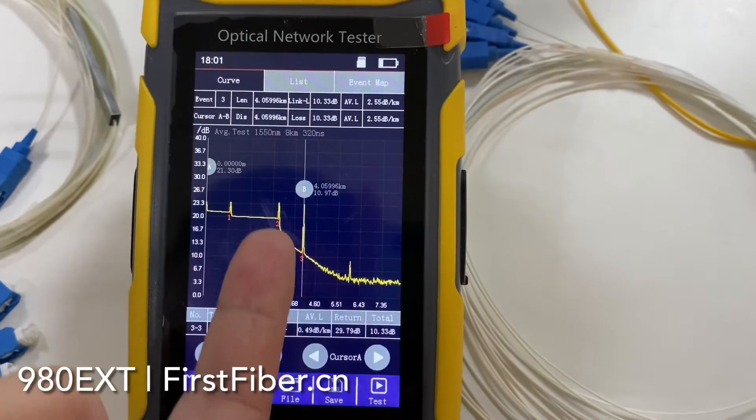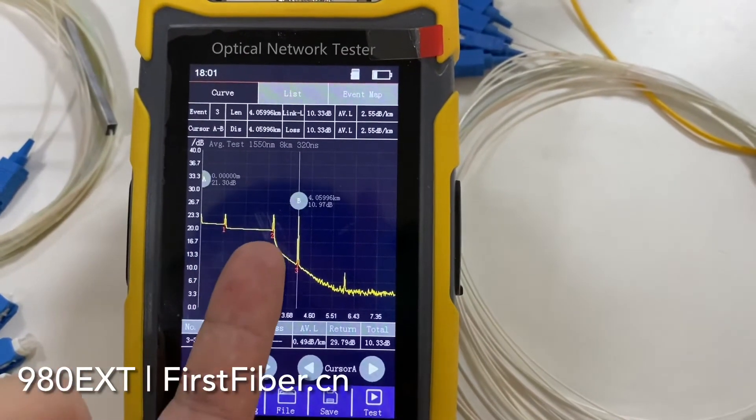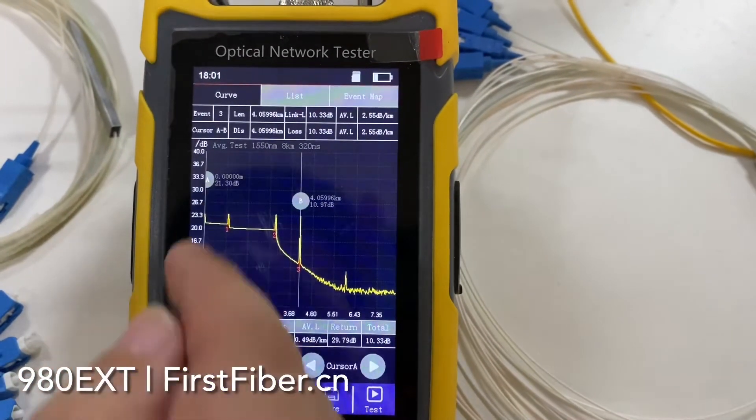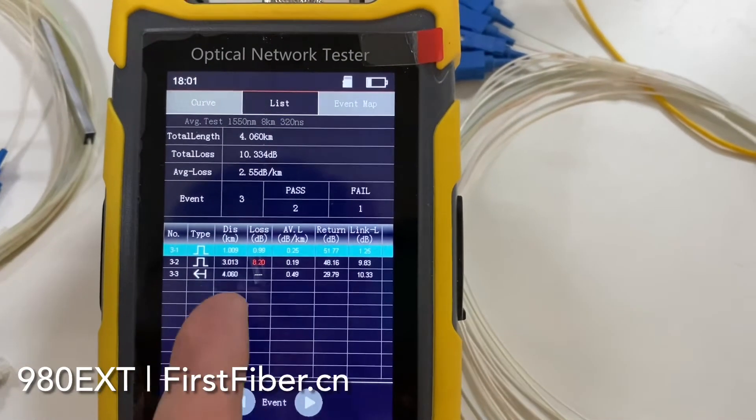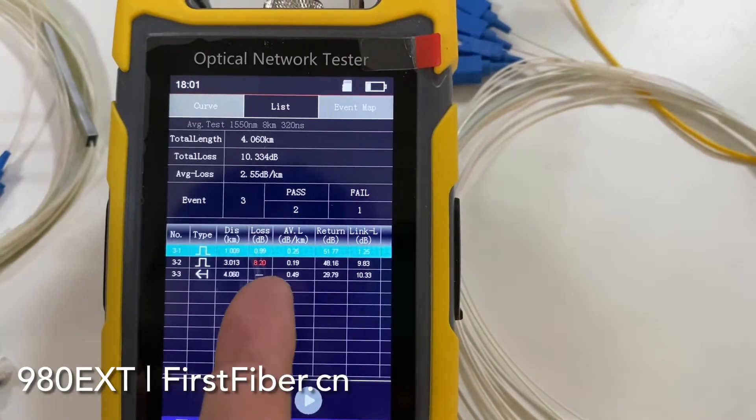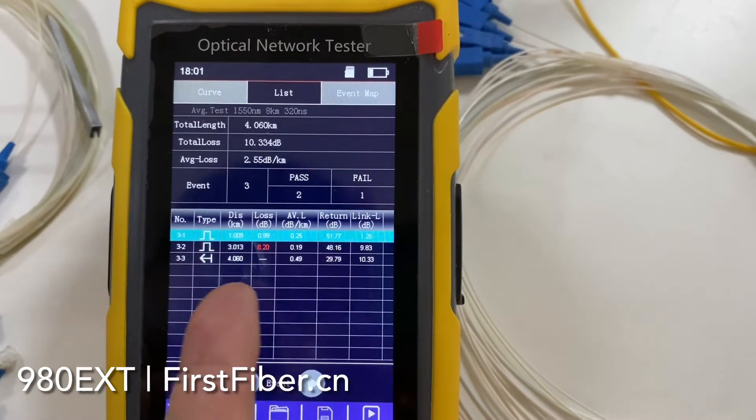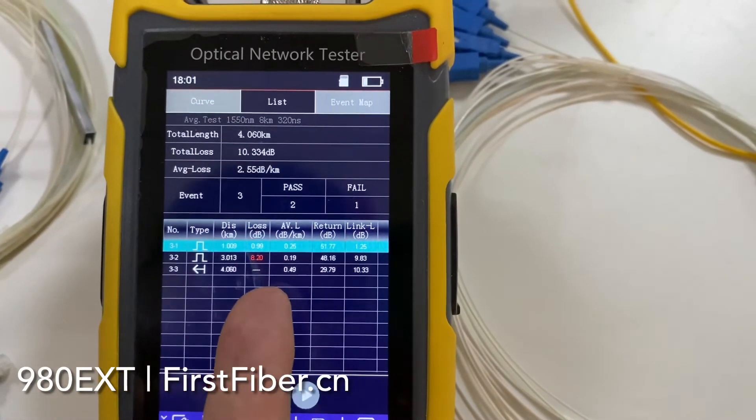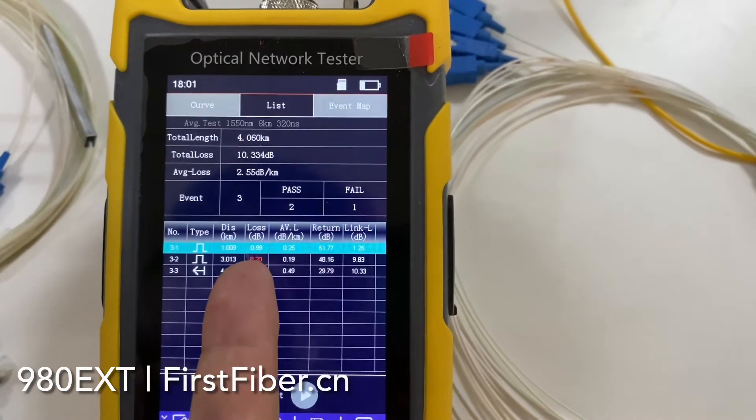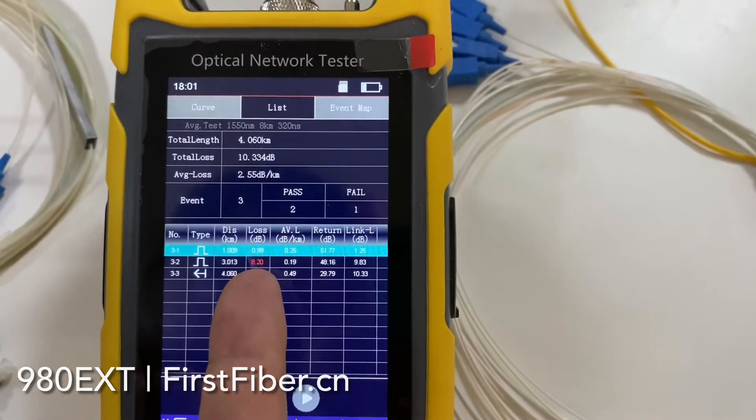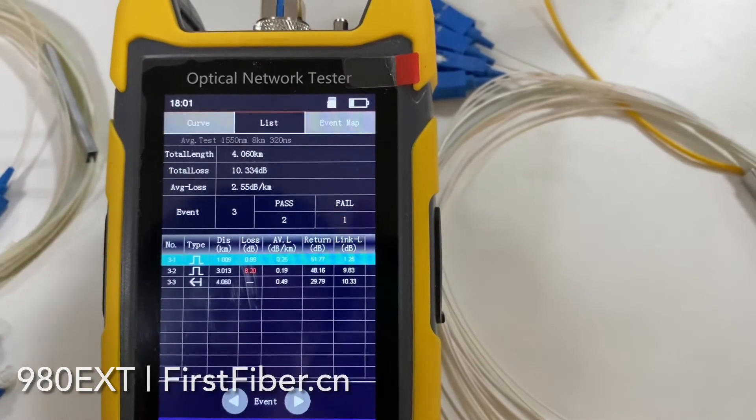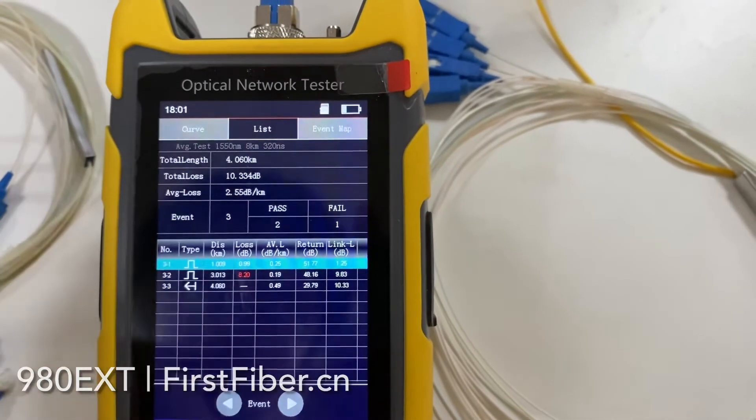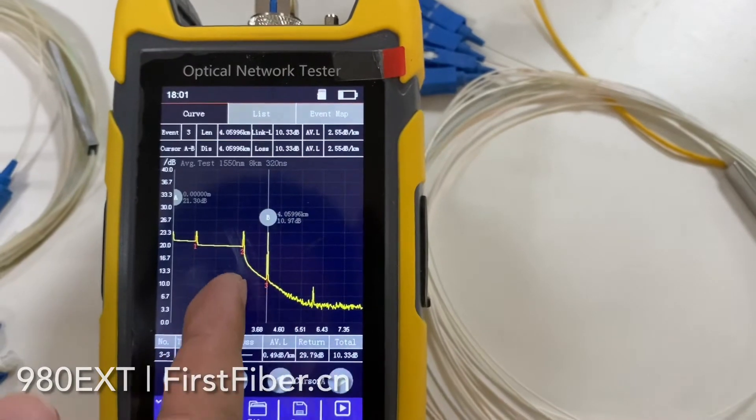The splitter point. Also, you can see it on the event list. The loss is about 8.2 dB.